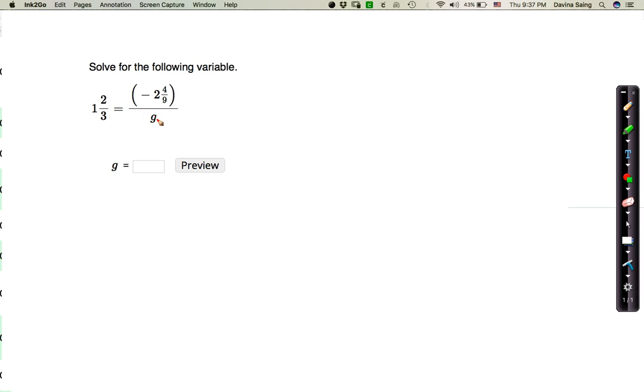So we need to get it out of there. So the way to do that is, because it means divided by g, I'm going to do the inverse operation, which means opposite. I'm going to go ahead and multiply both sides by g.